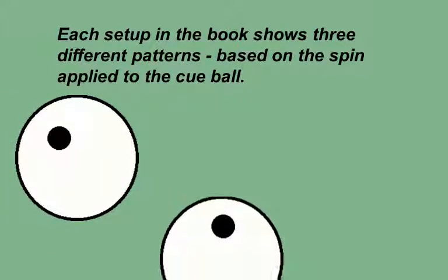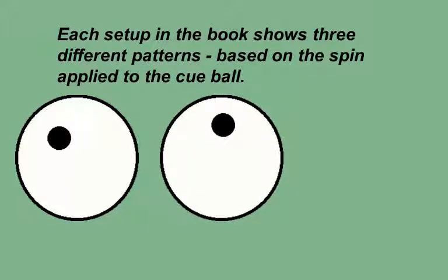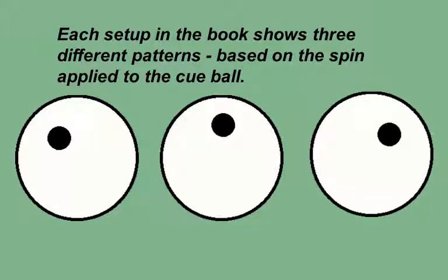For the 12 o'clock patterns, the cue ball rolls on a vertical line. For the 1:30 patterns, the cue ball rolls at a 45 degree right angle.